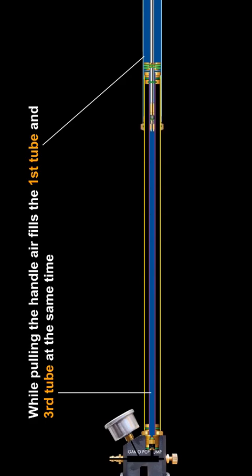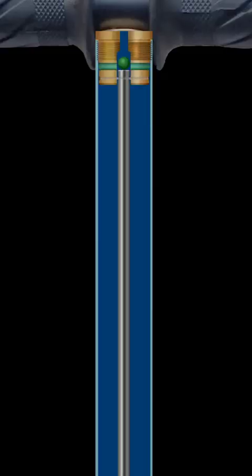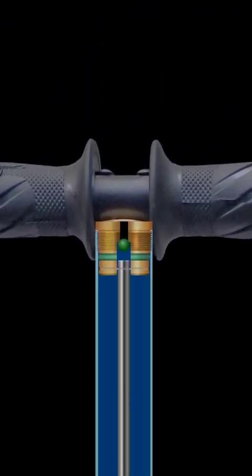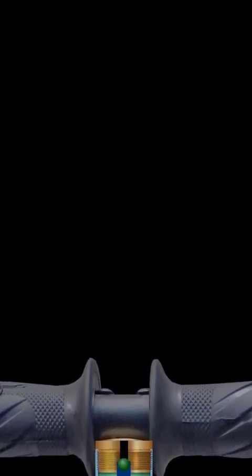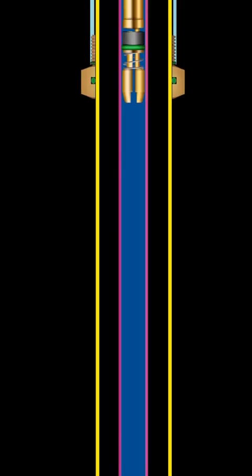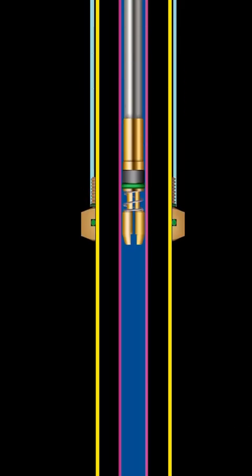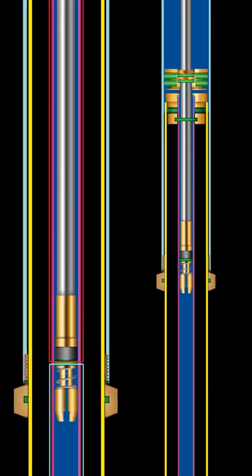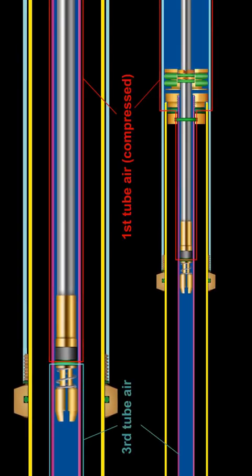When the handle is pushed, the rubber ball closes the inlet hole. In the third tube, the piston seal closes the air passage. At this point, the piston o-ring separates the air of the third tube from the first tube.